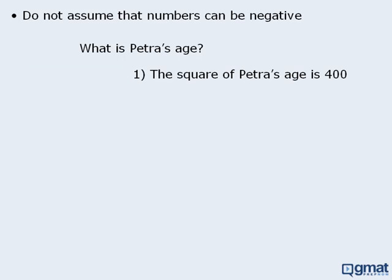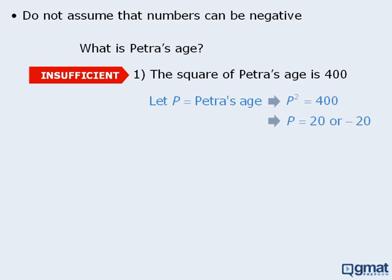Now compare this to a different question where we want to find Petra's age. Statement 1 tells us that Petra's age squared is equal to 400. If we let p equal Petra's age, we can write p squared equals 400. When we solve for p, we see that p can equal 20 or negative 20, so we might conclude that statement 1 is not sufficient. Of course this would be incorrect, since Petra's age cannot be a negative number. So once we remove negative 20 from the possible values of p, we can see that p must equal 20, which means that statement 1 is sufficient.